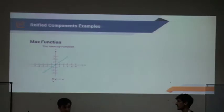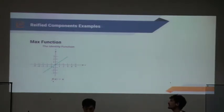To explain these components and understand how Evelyn works, we use two examples. The first one, the simple one, is a max function. In this case, we have the identity function, and we are looking at the maximum number in a range.